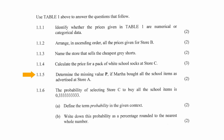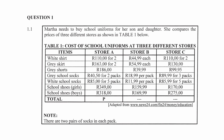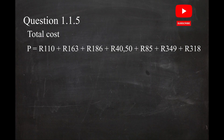In question 1.1.5, you have to determine the missing value P if Martha bought all the school items as advertised at Store A. The cost of all the school items at Store A are listed in the second column in the table. The total cost P equals the sum of all the prices in column 2, which equals a total cost of R1,251.50.